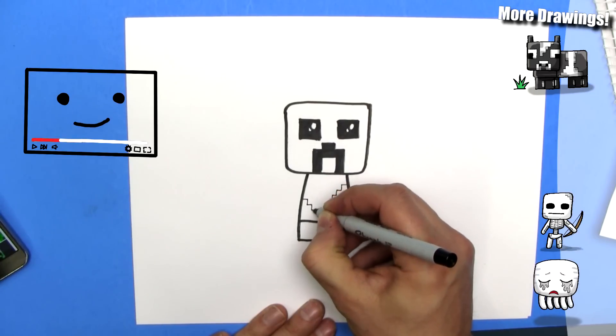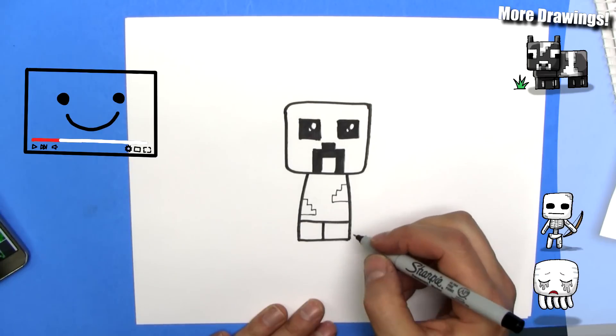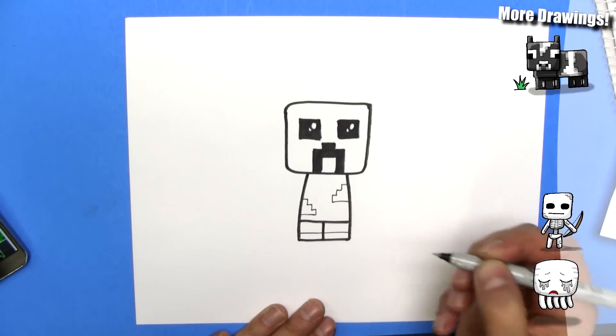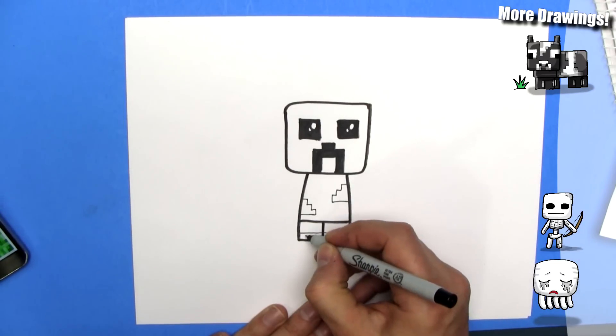There we go. Put one over here, just to give some pixel looks, and we're going to draw a line right across the bottom for his toes, and it's kind of like a checkerboard pattern down there.